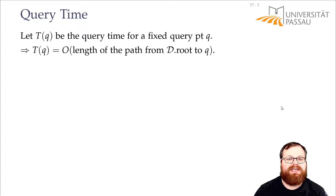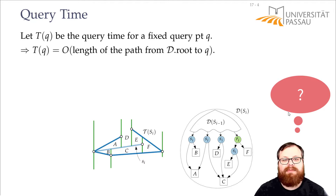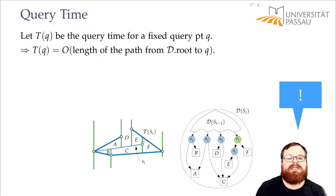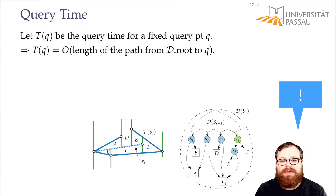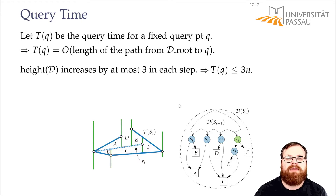Let's first look at it without the randomization. We have our data structure here, and how much longer can a query path become at one step? When we add a segment, we get three new separators: the segment itself, the vertical ray on the right, and eventually the vertical ray on the left. So there can be three new interior nodes on the path to some trapezoid where Q lies. In every step, the height increases by at most 3, meaning T is at most 3n.